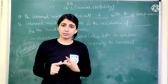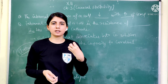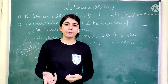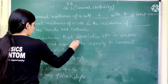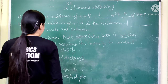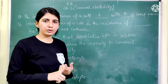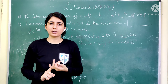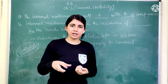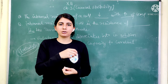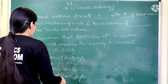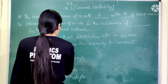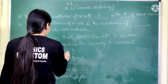Electrolyte is a concept from both chemistry and physics. Basically, when a substance is put into a solution, it dissociates into ions — meaning it breaks apart. This substance dissociates into ions in the solution. It involves a cathode and an anode: the anode carries negative charge and the cathode carries positive charge. The current passes through the solution. So an electrolyte is a substance that dissociates in solution and has the capacity to conduct electricity.